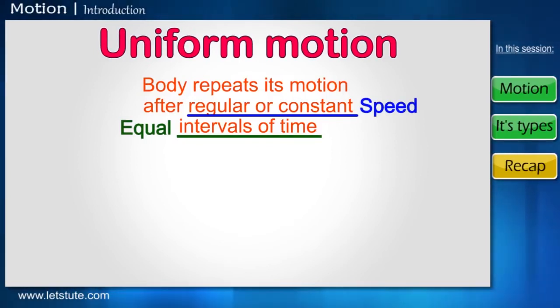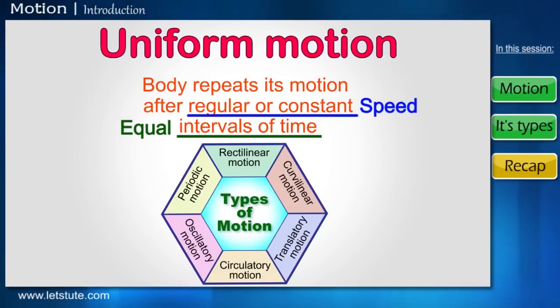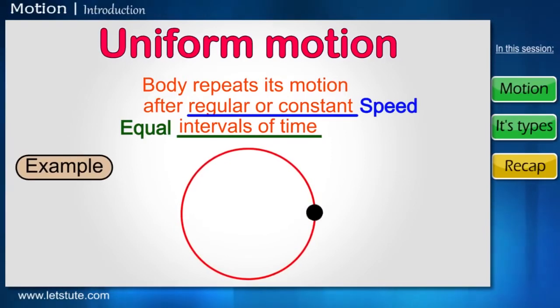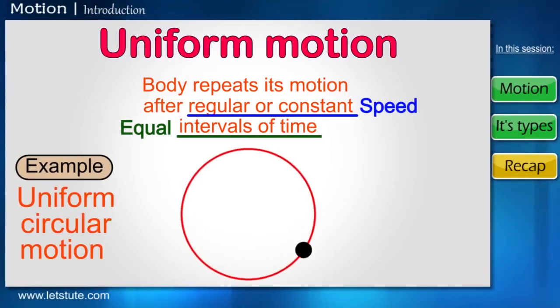As long as this condition is fulfilled, the concept of uniform motion can, in fact, be applied to other types of motion as well. So, if this type of motion is carried out in a circular path, then it is known as uniform circular motion.